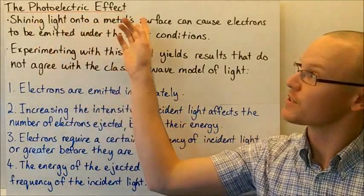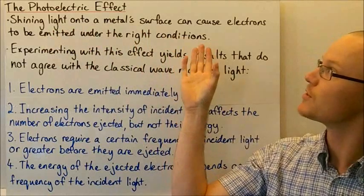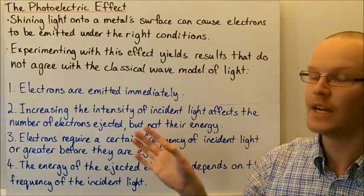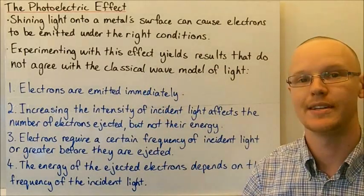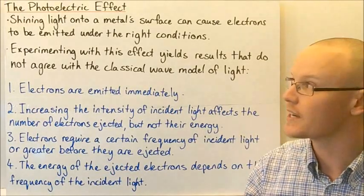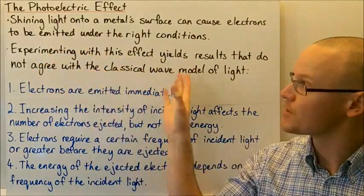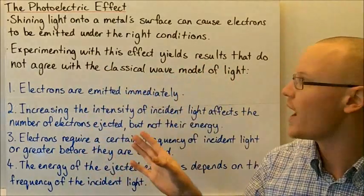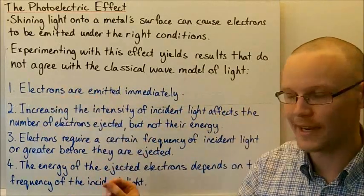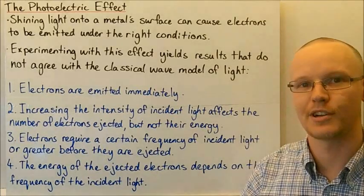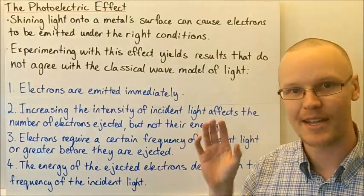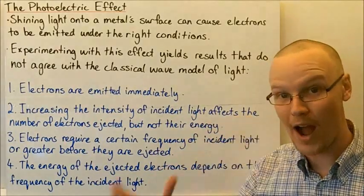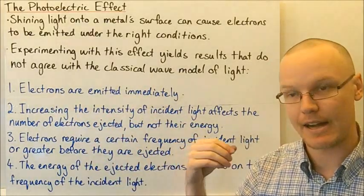Today we're going to be looking at the photoelectric effect. Shining light onto a metal surface can cause electrons to be emitted under the right conditions. Einstein worked with this effect and found that the results do not agree with the classical wave model for light. There were four main points that do not agree with light interacting with the metal surface as a wave and then releasing electrons.